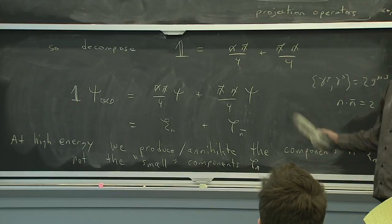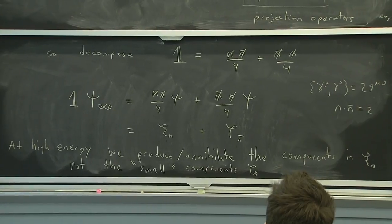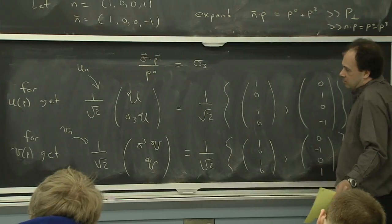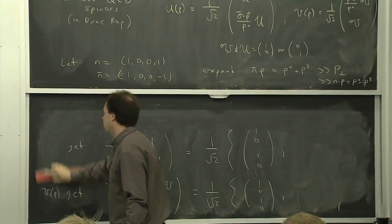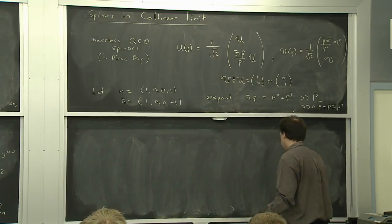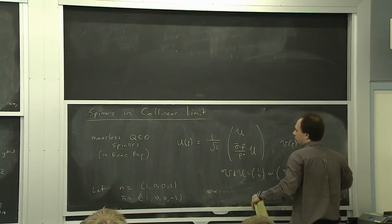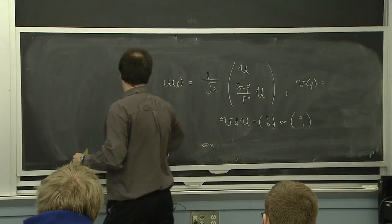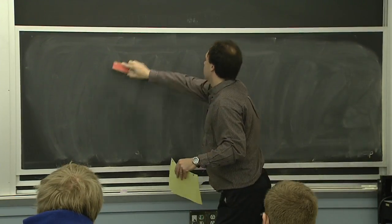There is a simplification in the spinors because we prefer to produce certain combinations. But unlike HQET, we didn't lose a degree of freedom — all four degrees of freedom (particles, antiparticles, and their spin states) survive. There was some simplification, but it didn't teach us about losing a degree of freedom the way HQET did.